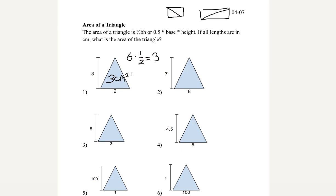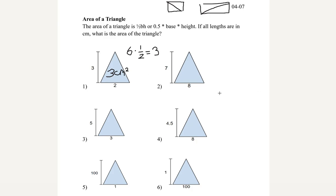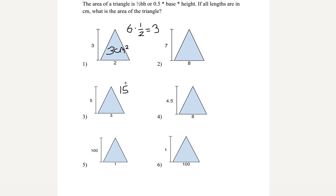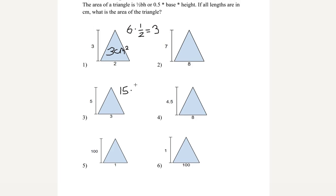You've got to make sure to change it to squared because we're multiplying it and finding the area. Okay, let's try number 3. We have a base of 3 and a height of 5. We multiply those two together and we get 15. And then our final step to find the area would be multiplied by 1 half.